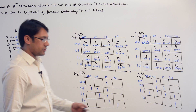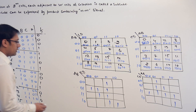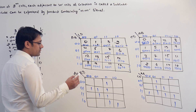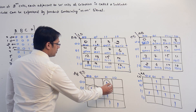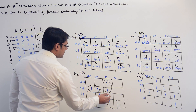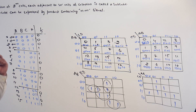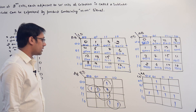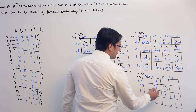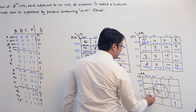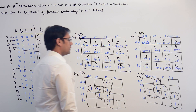Now, if you take these K-maps, what are the subcubes we can make? The biggest subcubes — we have discussed about the biggest subcubes which we can make. This can be 1 subcube, this can be 1 subcube, this can be 1 subcube, as well as this can be 1 subcube. We could have made a subcube with these 2 also, but I haven't done it — I will discuss why.